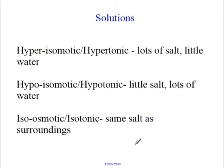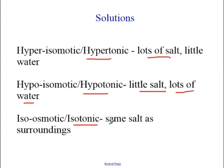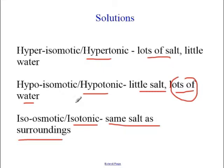A few terms we should have learned last year. Hypertonic means you have lots of salt and therefore little water—they're the opposite. Hypotonic means little salt but lots of water. Isotonic means the same salt as the surrounding. For example, last year we did the log thrown in the ocean. The ocean has a lot of salt; the log does not. So the log, which doesn't have much salt, must have lots of water. The log would be considered hypotonic—it has less salt than the ocean.